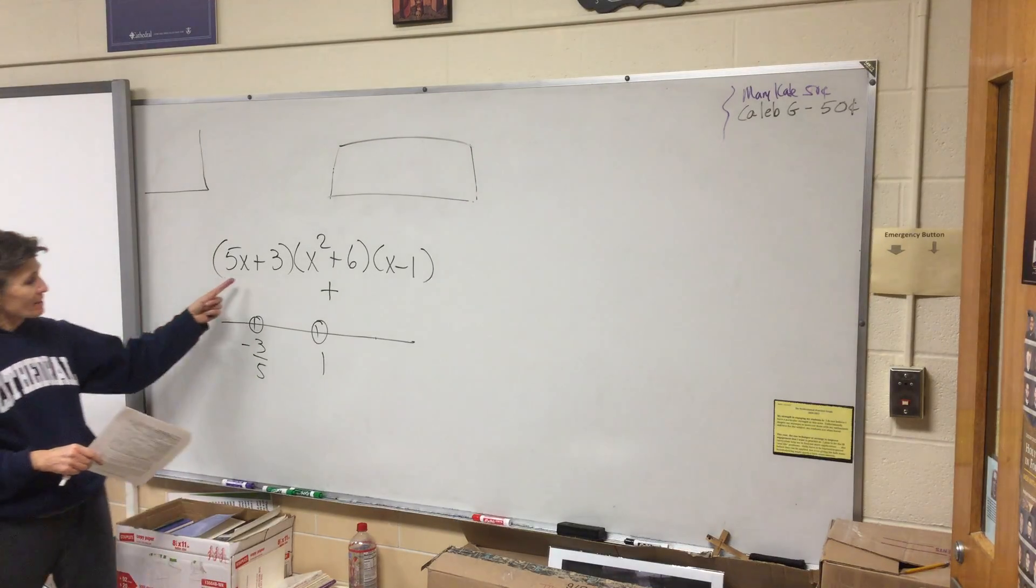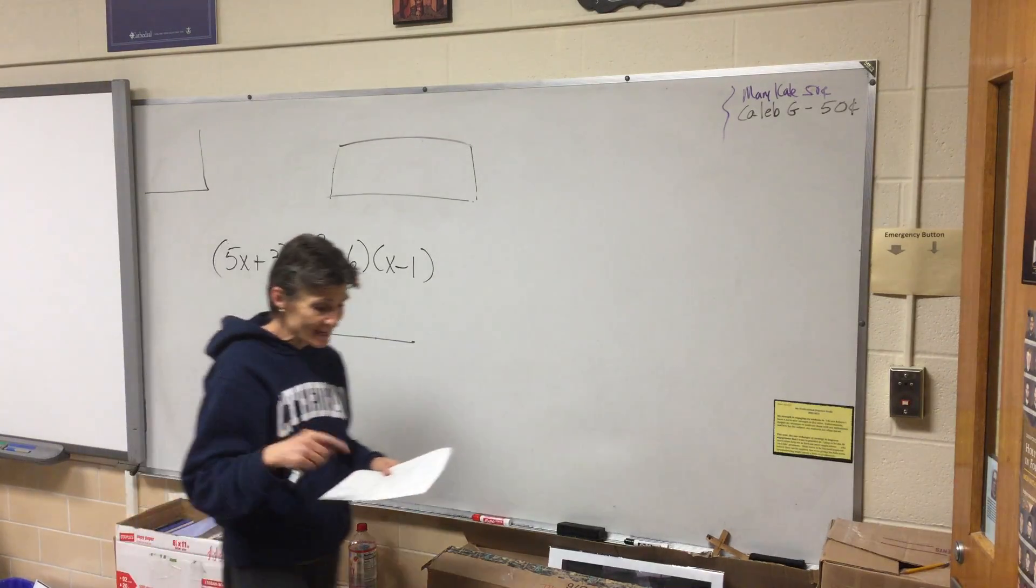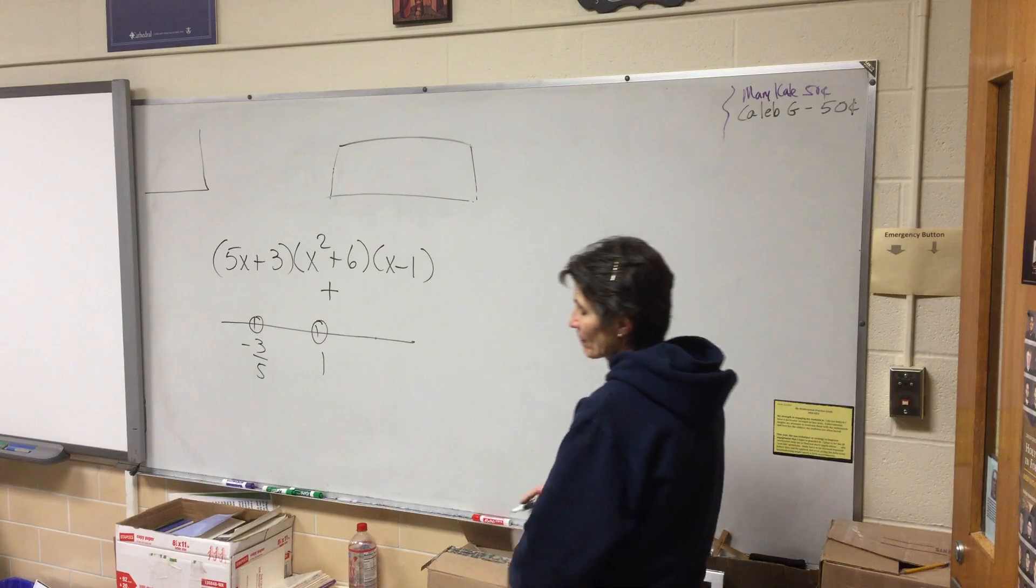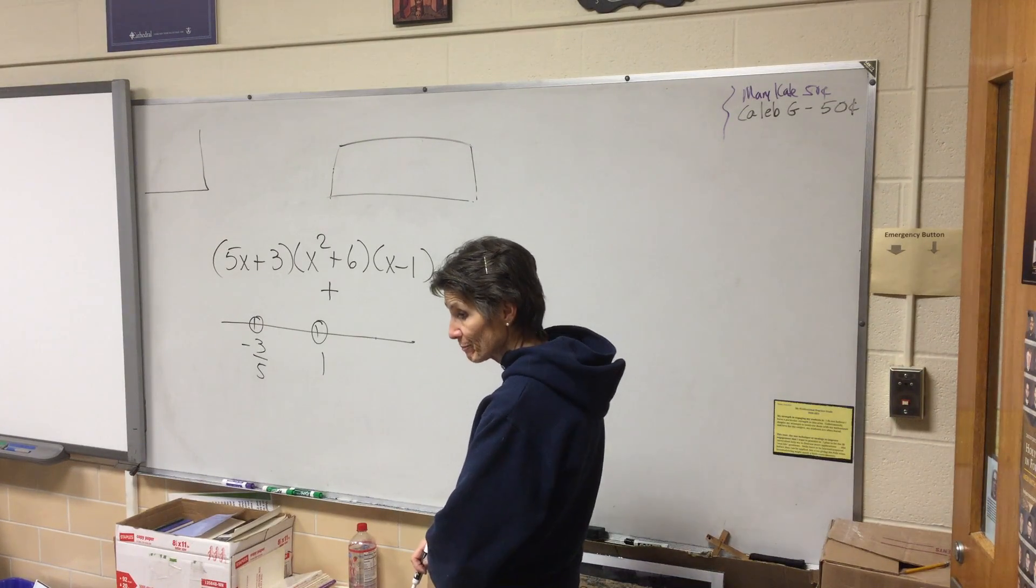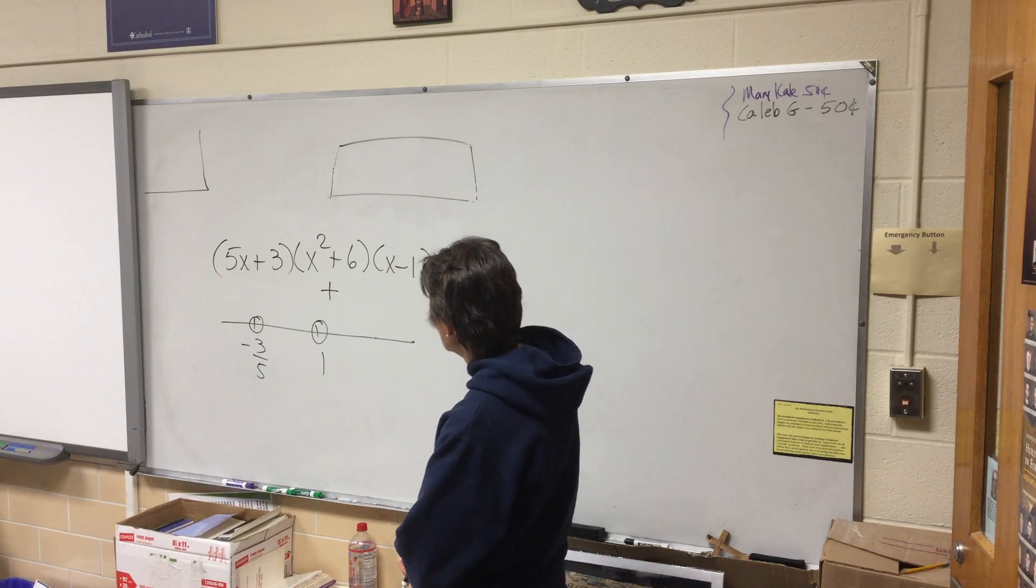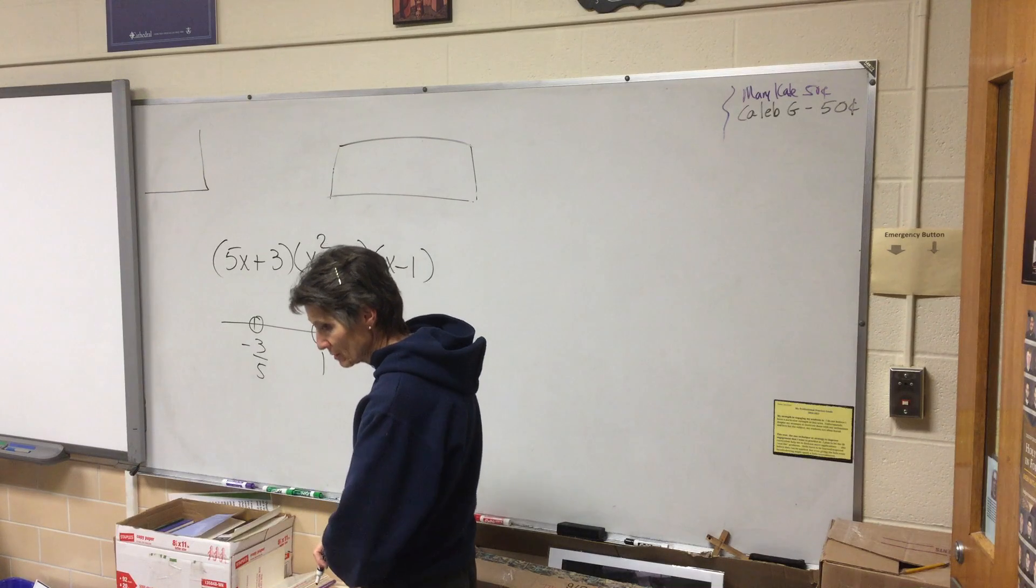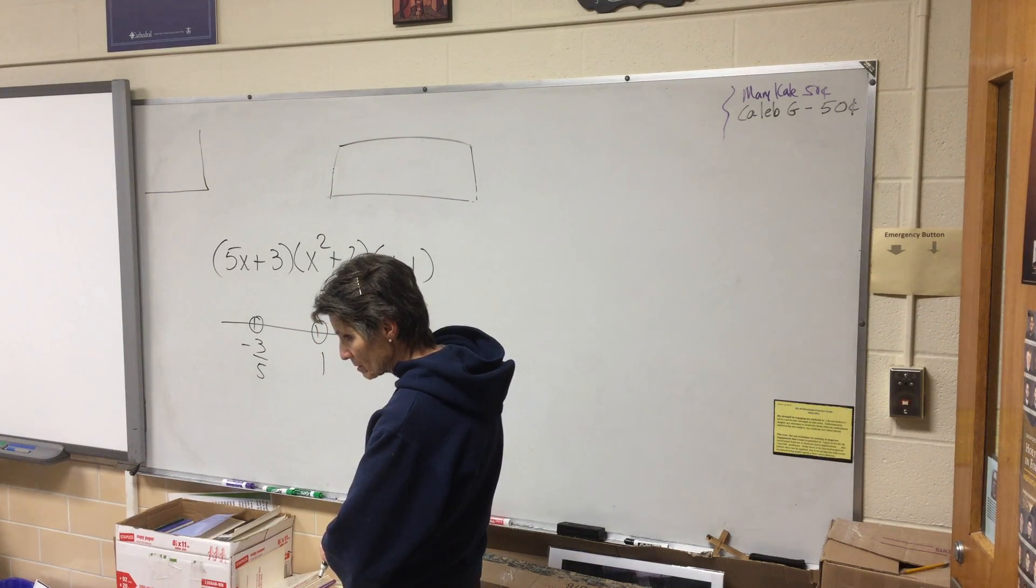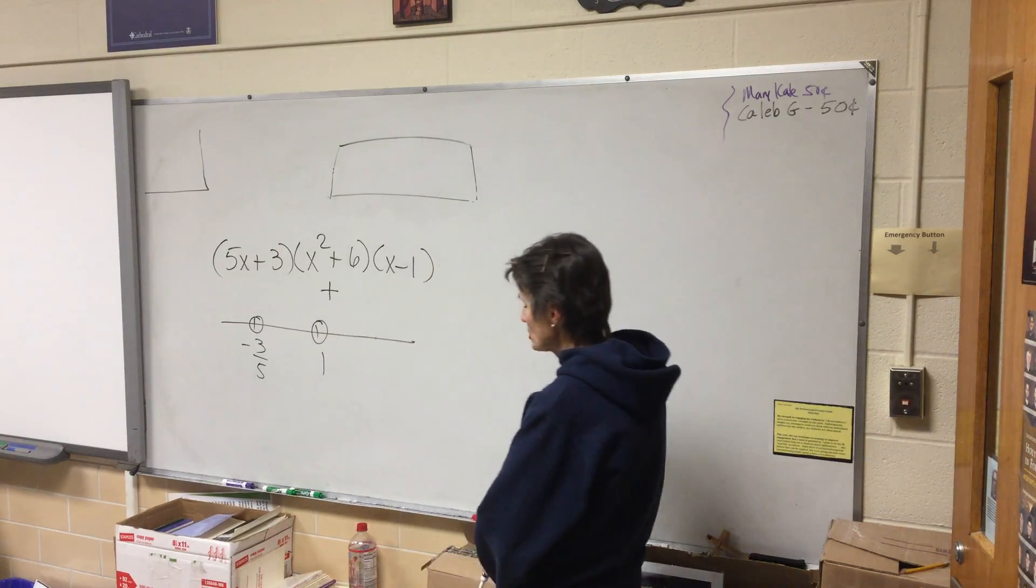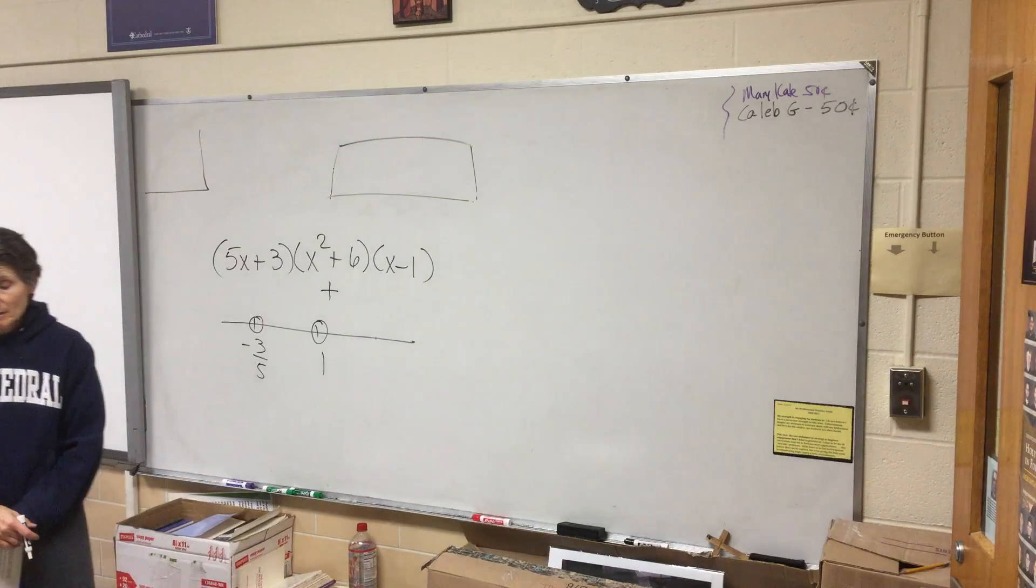If you let x be negative three-fifths or one, you will get zero. So the zero values happen at negative three-fifths and positive one. But if that was like x squared plus two, it would be? No, x squared plus two will never be zero either. So that will never be zero, but it will be positive always.